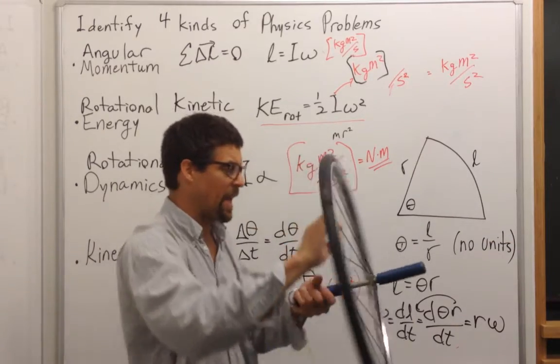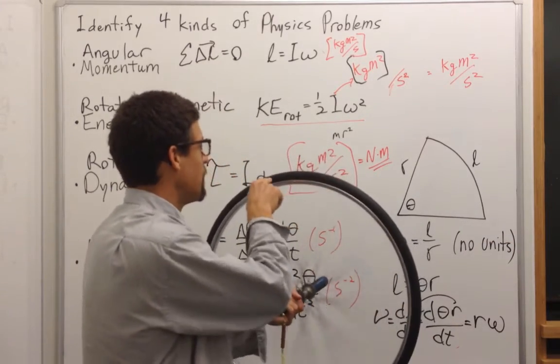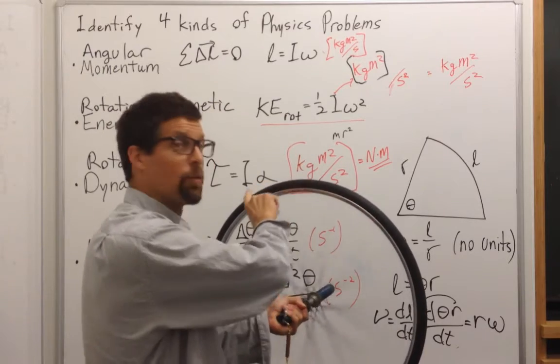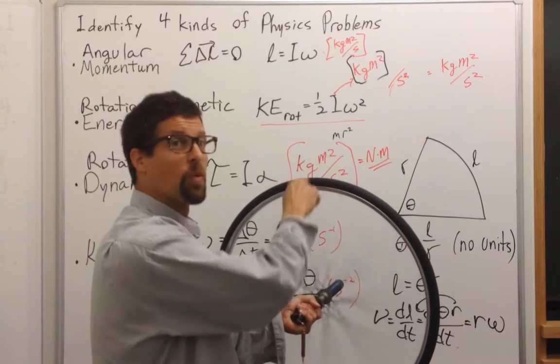So if a bicycle wheel is spinning, the speed of the rim is omega in radians per second times the radius of the wheel.